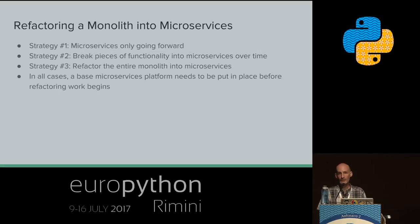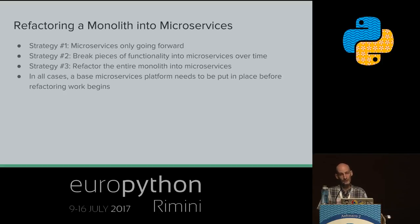Another option is to start with the big service, incorporate it, but then over time start breaking away parts of that big application into small services. Eventually you'll end up with a pure microservices architecture, but there will be a potentially long transition period where you're working with a hybrid. That's probably what most people do.